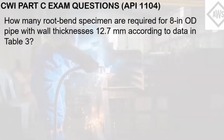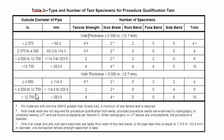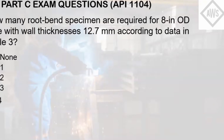How many root bend specimens are required for an 8 inch outside diameter pipe with wall thickness 12.7 mm according to data in Table 3? A. None  B. 1  C. 2  D. 3  E. 4. This question explicitly states the table number to refer to — Table 3. The 8 inch outside diameter falls under the 4.5 inch to 12.75 inch category. The wall thickness qualifier is inclusive of 0.5 inch or 12.7 mm, so the number of root bend specimens is 2. The answer is letter C.